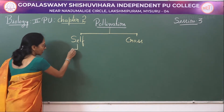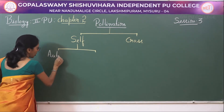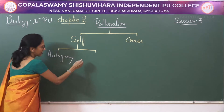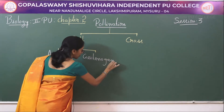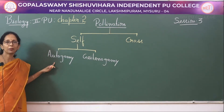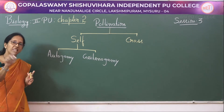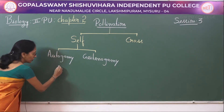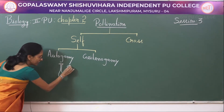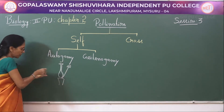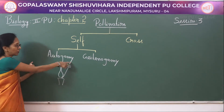In self-pollination there are two types. One is autogamy, and the other is geitonogamy. Autogamy means transfer of pollen grains from the anther to the stigma of the same flower — it includes the same flower. Imagine this is the gynoecium and this is the stamen: the transfer of pollen grains from the anther to the stigma of the same flower is said to be autogamy.